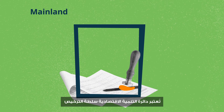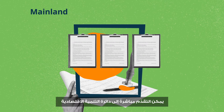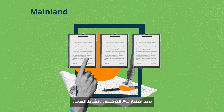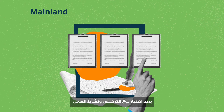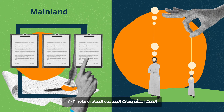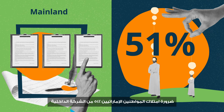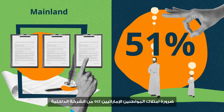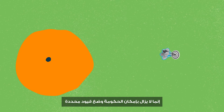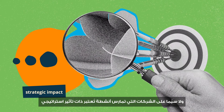On the mainland, the Department of Economic Development (DED) is the licensing authority and corporate regulator of companies. To set up on mainland UAE, you can apply directly to the DED after selecting your license type and business activity. As of 2020, new legislation removed requirements for 51% national ownership on onshore companies, though the government can still apply restrictions on specific activities deemed of strategic impact.